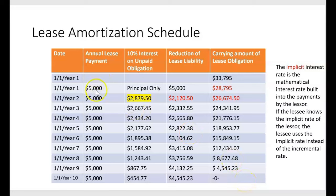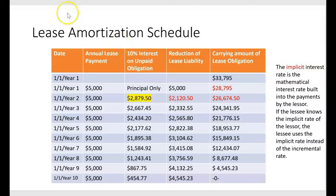Although each payment is an even $5,000, a portion represents interest and a portion represents principal. At the end of ten payments there's a zero obligation. The only way this works — coming out to an even zero balance — is if it's based on an interest rate, in this case 10%. Whatever rate is built into the amortization schedule is known as the implicit rate. If the lessee knows this rate, they use it; if not, they use the incremental borrowing rate.